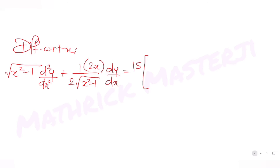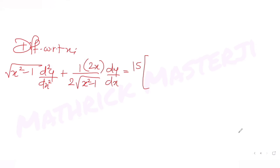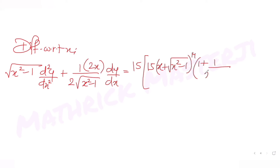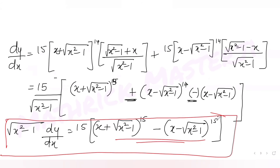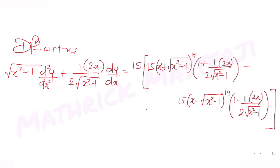On the right side, differentiating: 15·[15·(x + √(x²-1))^14·(1 + x/√(x²-1)) - 15·(x - √(x²-1))^14·(1 - x/√(x²-1))]. The 2s cancel throughout, simplifying the expression.